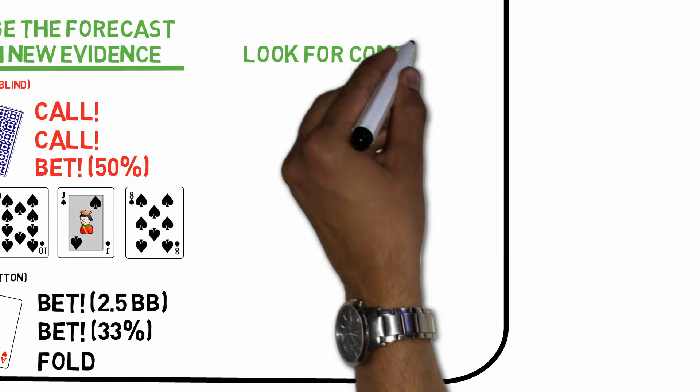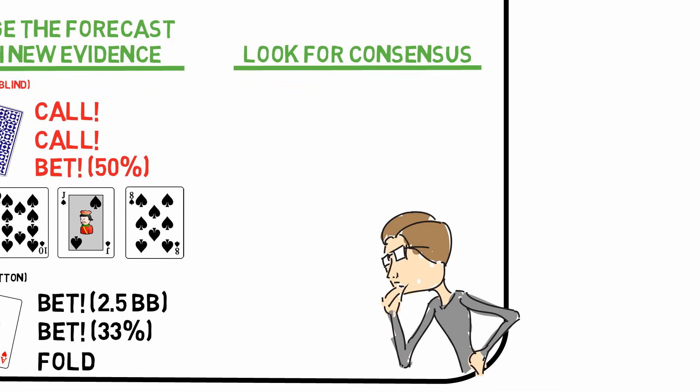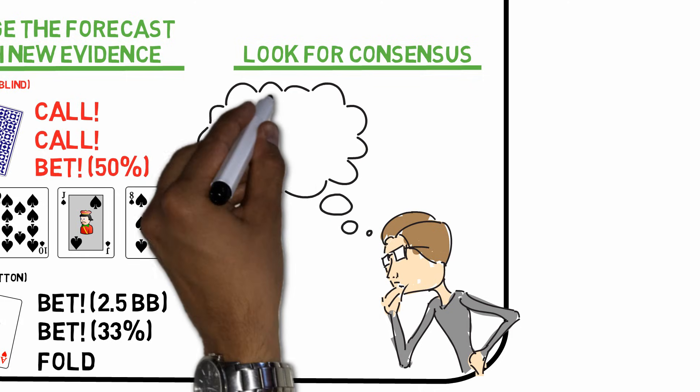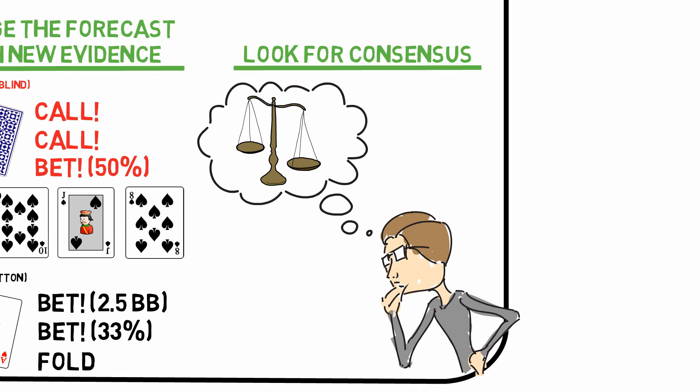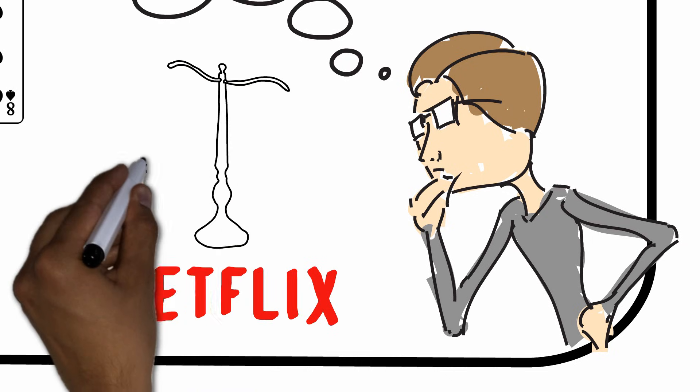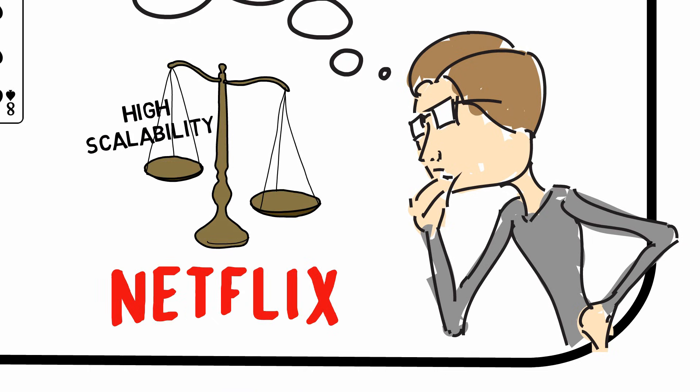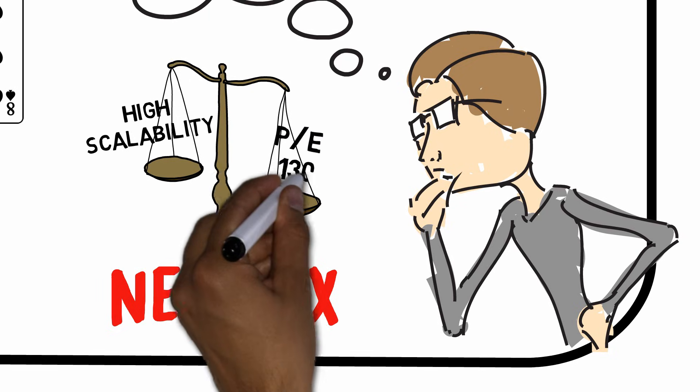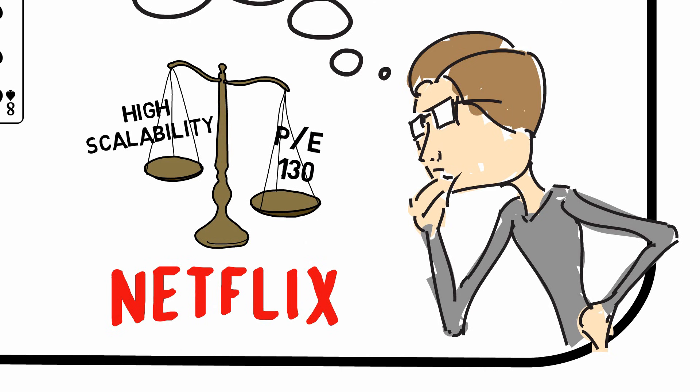Look for consensus. Good predictors are good at weighing multiple sources of information. They don't get lost in narratives or stories, and they are able to weigh both quantitative and qualitative information together before making their decisions. For example, they understand that Netflix can be a great stock to buy because it has an enormous potential for scalability. But simultaneously, they realize that it's quite expensive to buy a stock, no matter how great it may be, for 130 times its last year's earnings.